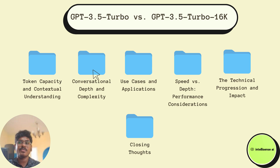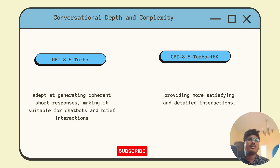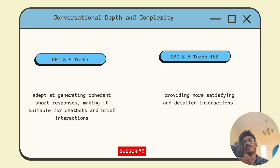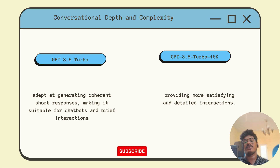Beyond token capacity, let's delve into the implications of conversational depth and complexity. GPT-3.5 Turbo is adept at generating coherent short responses, making it suitable for chatbots and brief descriptions. However, it might struggle to retain context in lengthy back-and-forth conversations.